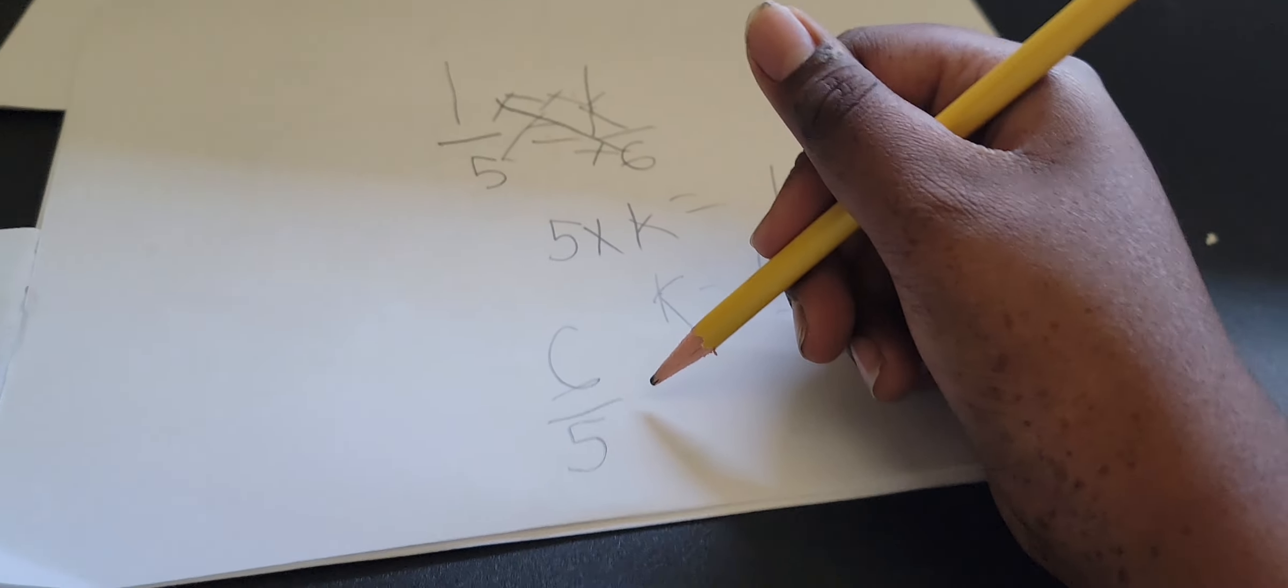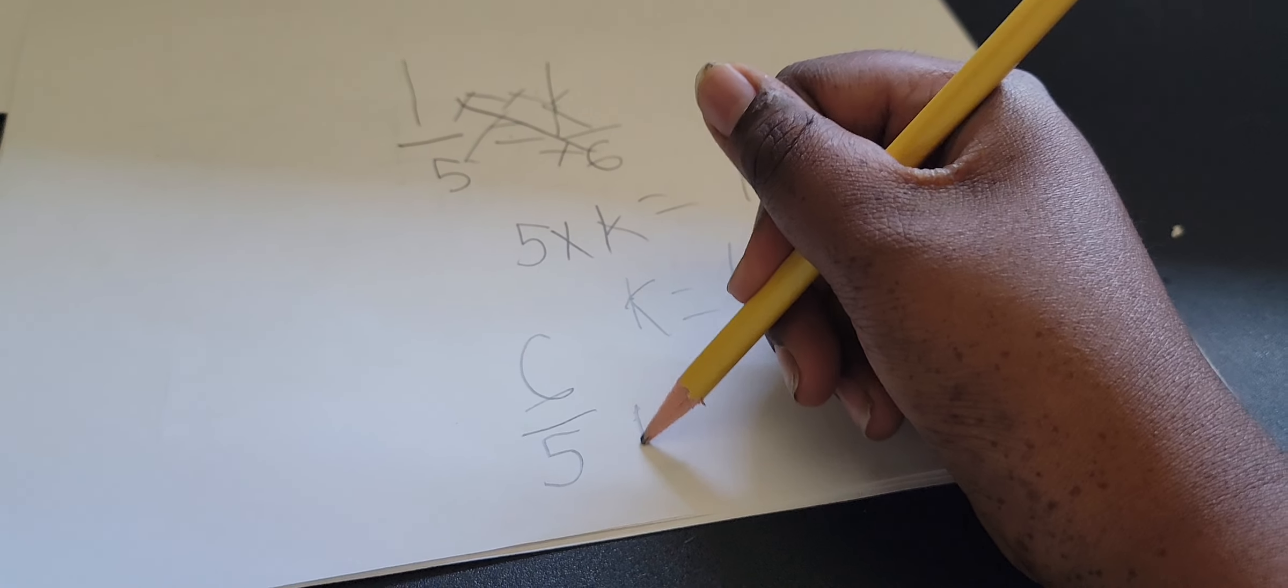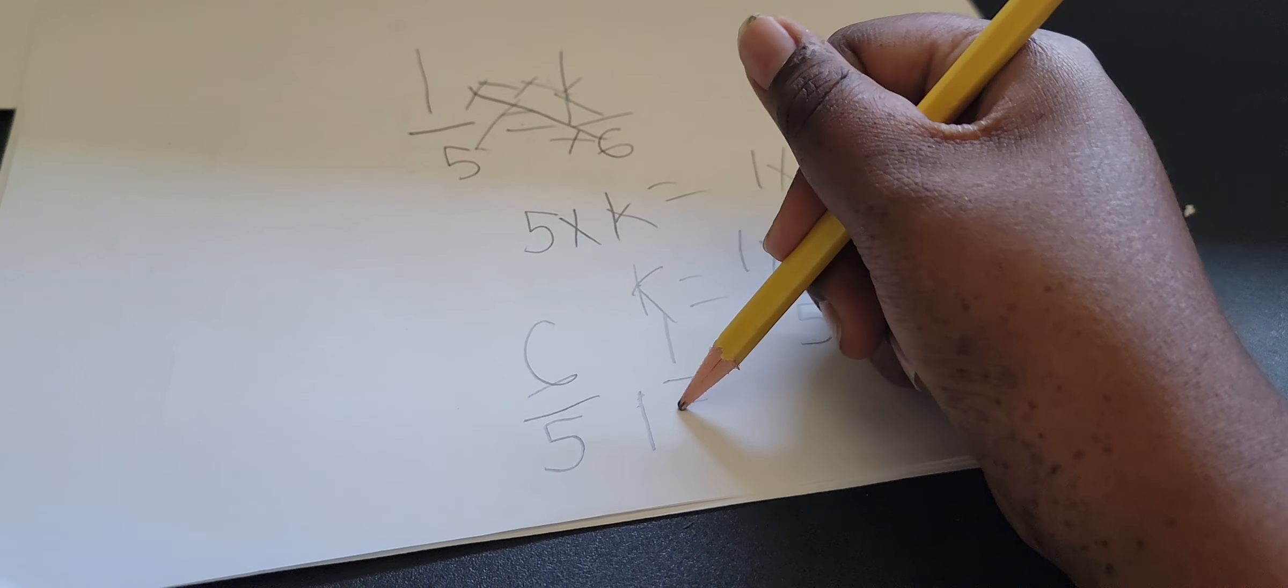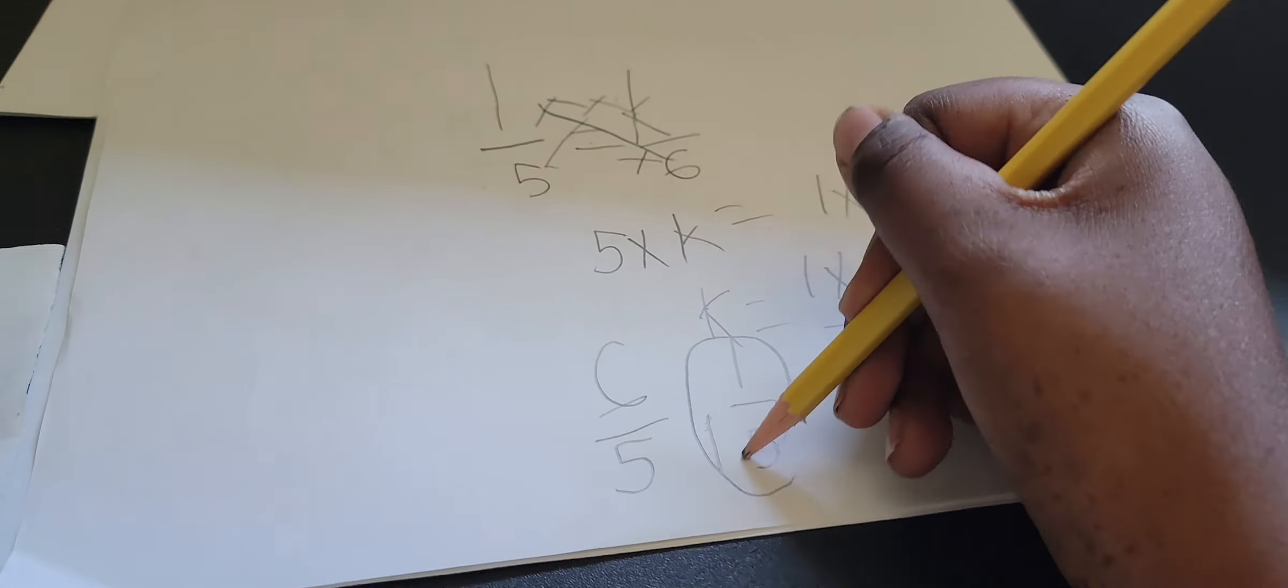6, 5, minus 1. That's 1 by 5. 1 and 1 by 5.